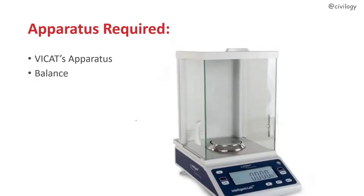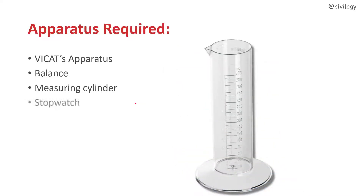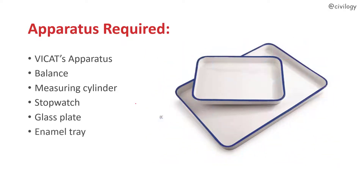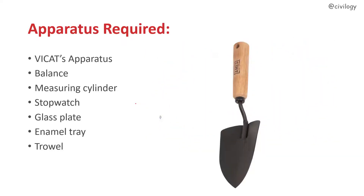Additional apparatus required includes a balance to weigh the materials, measuring cylinder, stopwatch, glass plate, enamel tray, and trowel. These are the basic apparatus required for conducting the experiment.